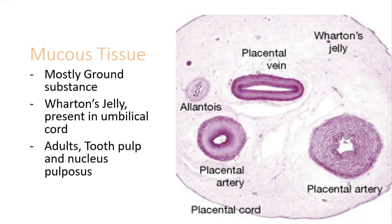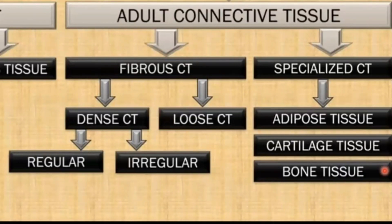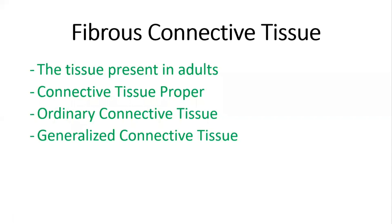Interestingly, mucus tissue is also found in some adult structures — such as the tooth pulp inside your teeth, and in the nucleus pulposus of the vertebral column. Now let's move to adult connective tissue. We have two major divisions: fibrous connective tissue and specialized connective tissue. Fibrous connective tissue is also called connective tissue proper, ordinary connective tissue, or generalized connective tissue.